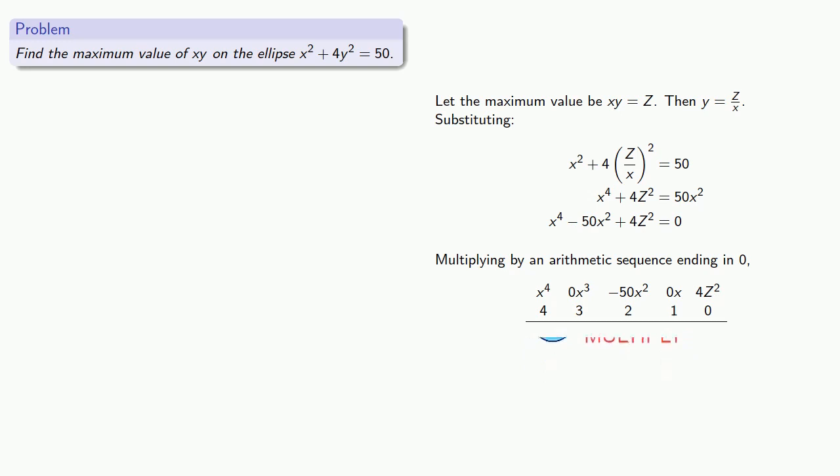We find the roots and obtain 0, 5, and negative 5, what we might call our critical values.